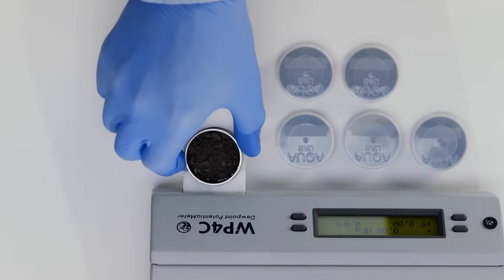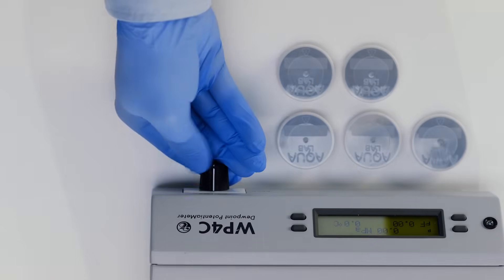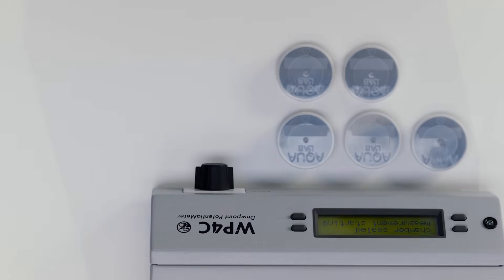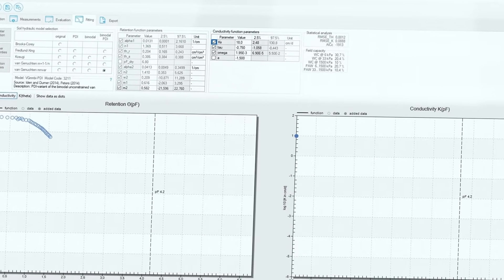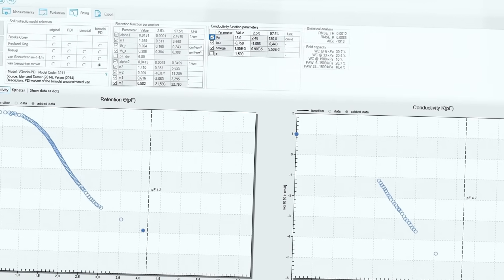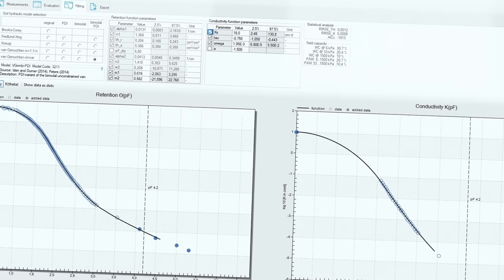Finally, measure all six samples with the WP4C to complete the dry end of the moisture release curve. Each measurement sets the standard for precision, and the whole process is more streamlined and less error-prone than ever before.